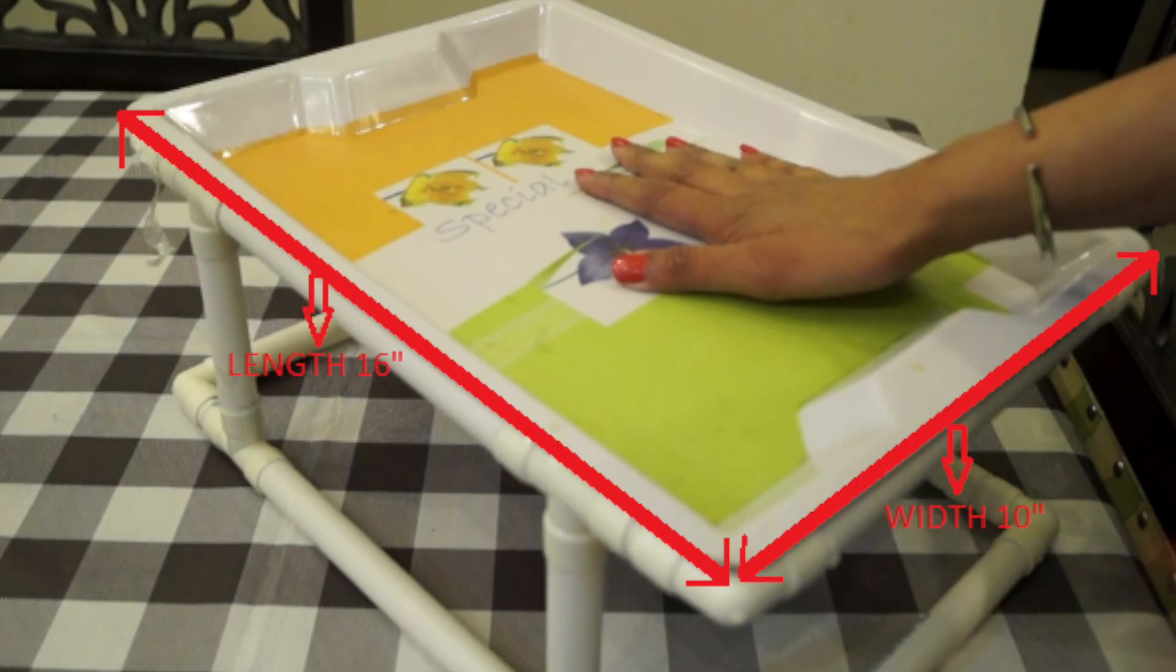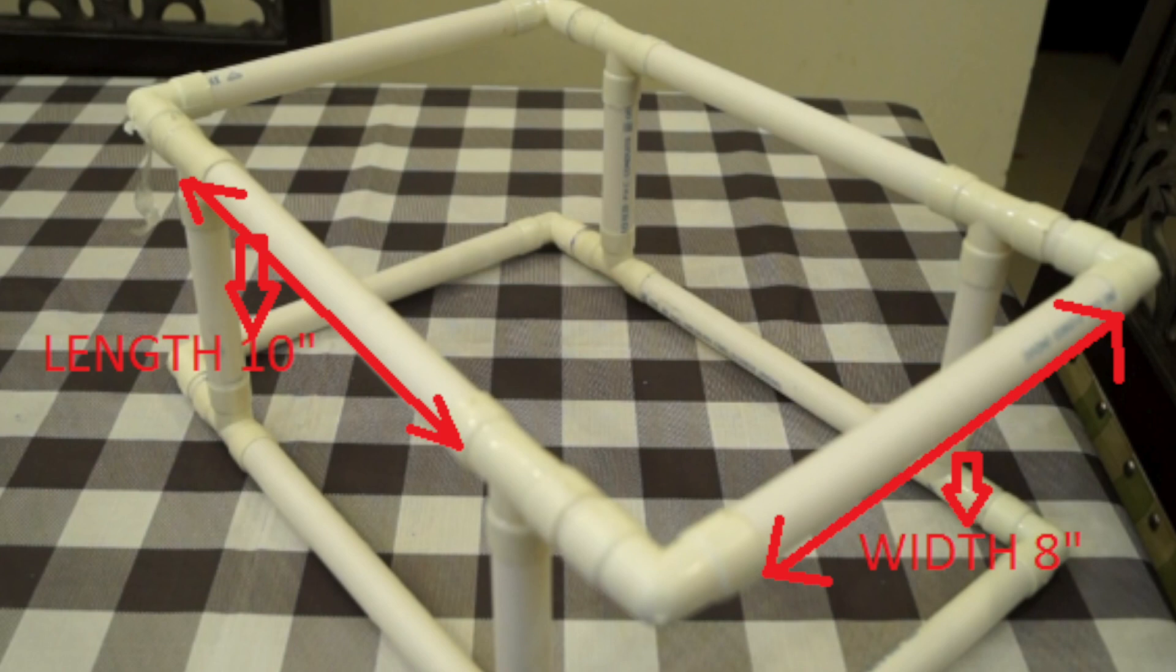If we talk about my serving tray, lengthwise it measures 16 inches and widthwise it measures 10 inches. That is why I cut one PVC pipe in the length of 10 inch and the other in the width of 8 inch.